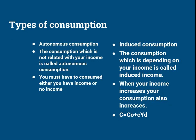Now let's discuss the two major types of consumption. The first is autonomous consumption and the second is induced consumption. Autonomous consumption is consumption that is not related to your income — either you have income or no income, you have to consume. Induced consumption is consumption that depends on your income; more income means you will consume more.